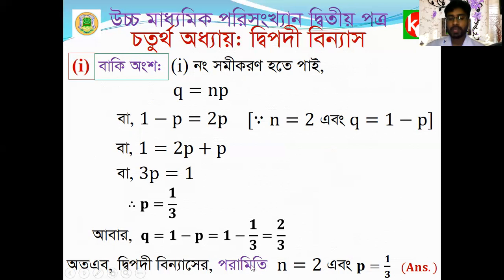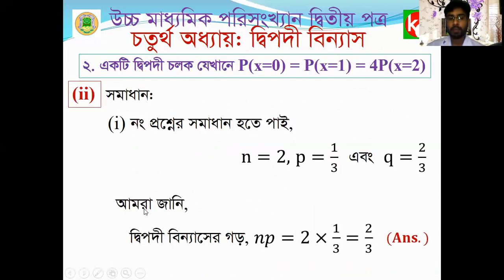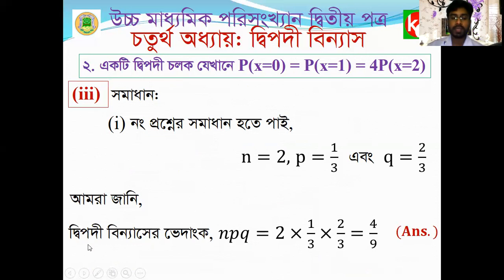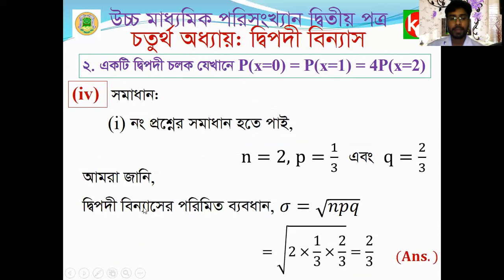We have the two parameters. The mean equals np, and nr equals 2p with p equal to 1/3. The variance equals npq, so npq equals 3 times the standard deviation sigma. The standard deviation sigma equals the square root of npq.